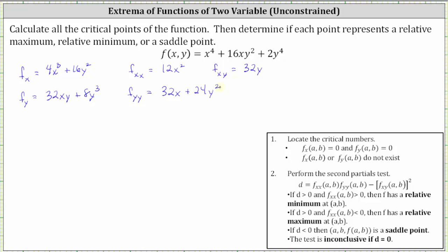Now let's locate the critical numbers by determining where the first order partials are both equal to zero or do not exist. We need to solve the system of equations: 4x cubed plus 16y squared equals zero, and 32xy plus 8y cubed equals zero. This is a fairly complicated system. Let's solve the first equation for x cubed by subtracting 16y squared on both sides, then dividing both sides by four, giving us x cubed equals negative 4y squared.